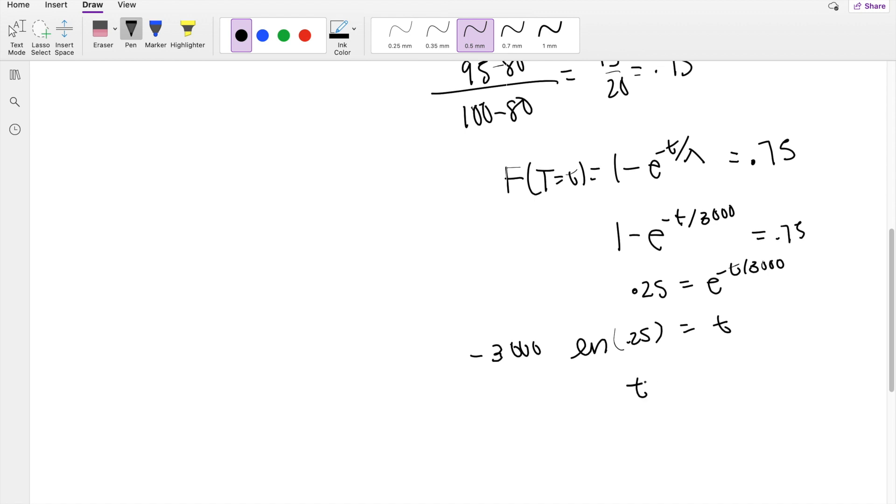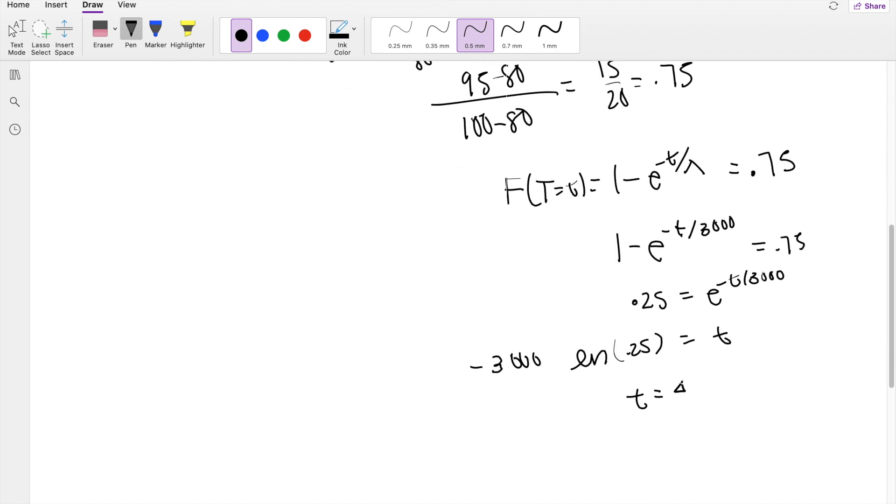So then t, which is the 75th percentile, or the 95th percentile of the conditional probability, is 4158.88.